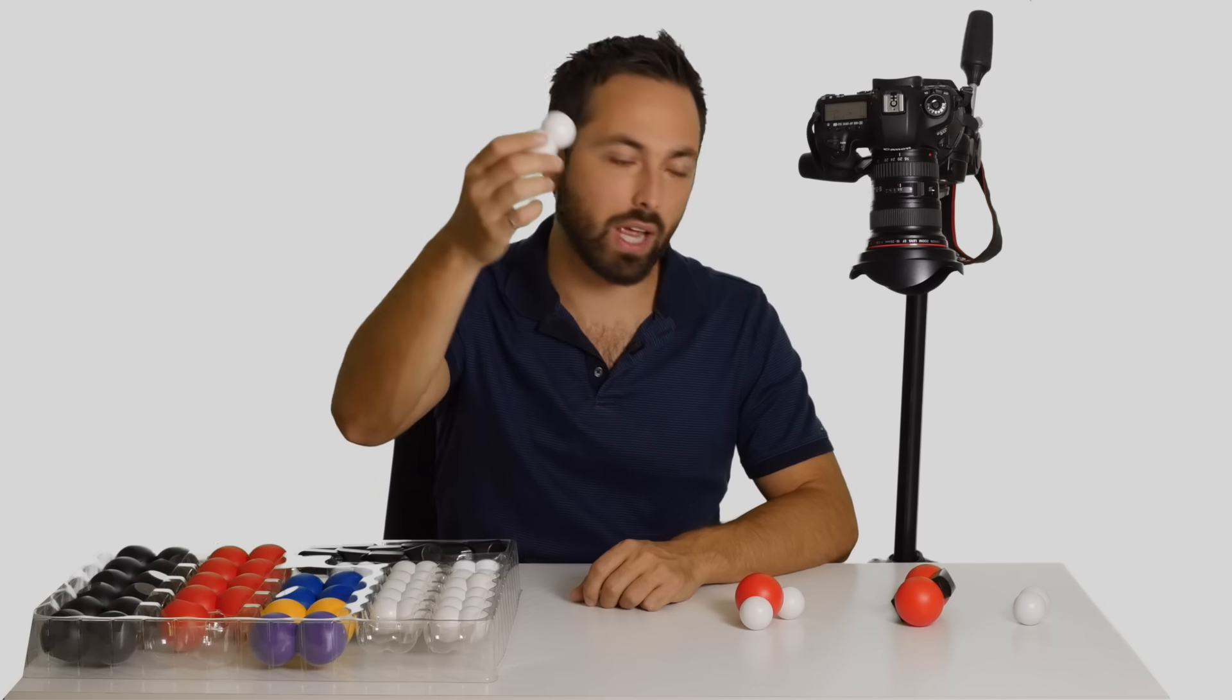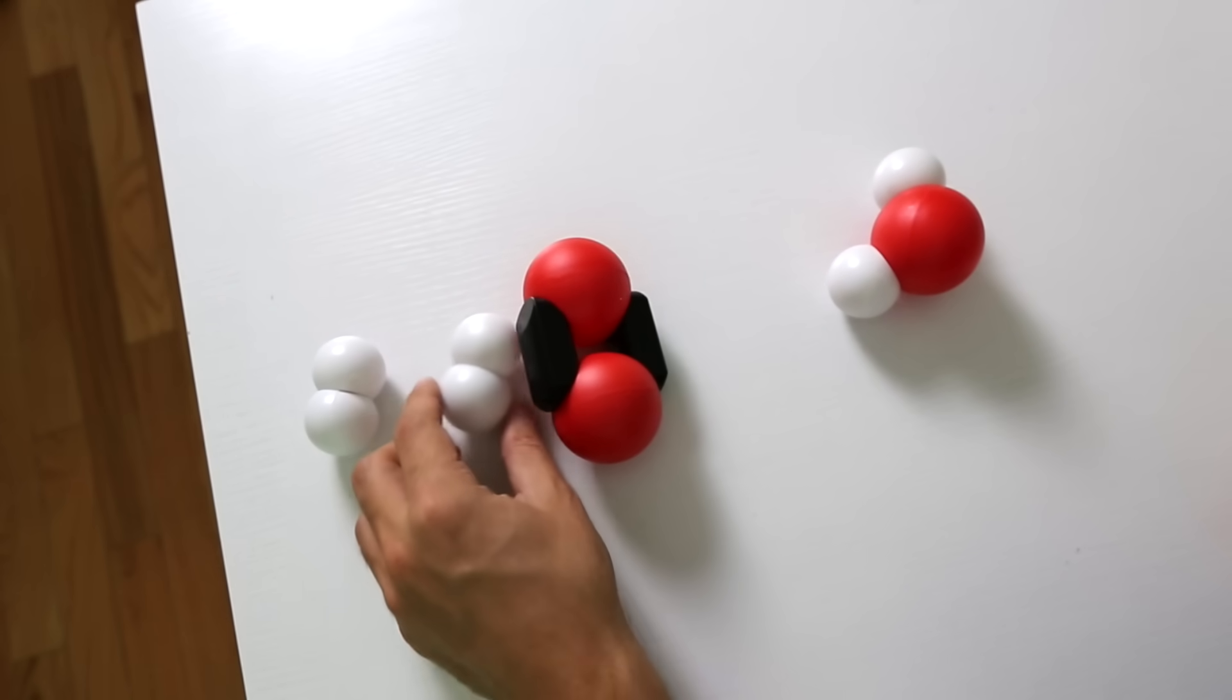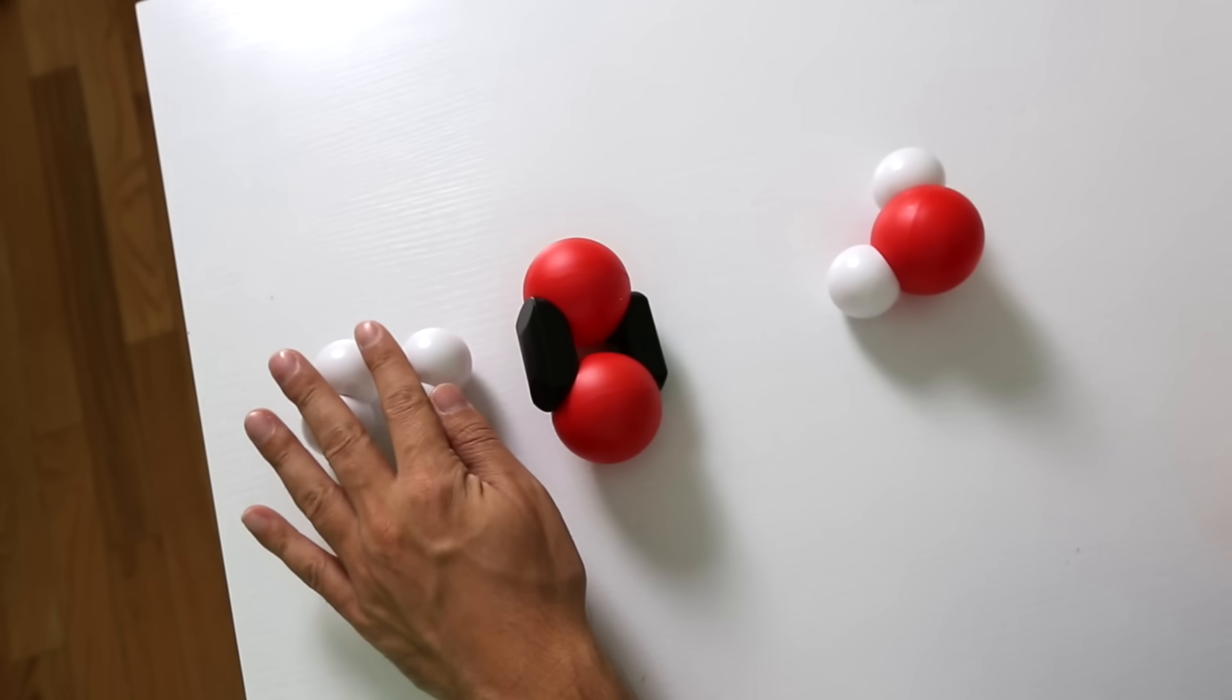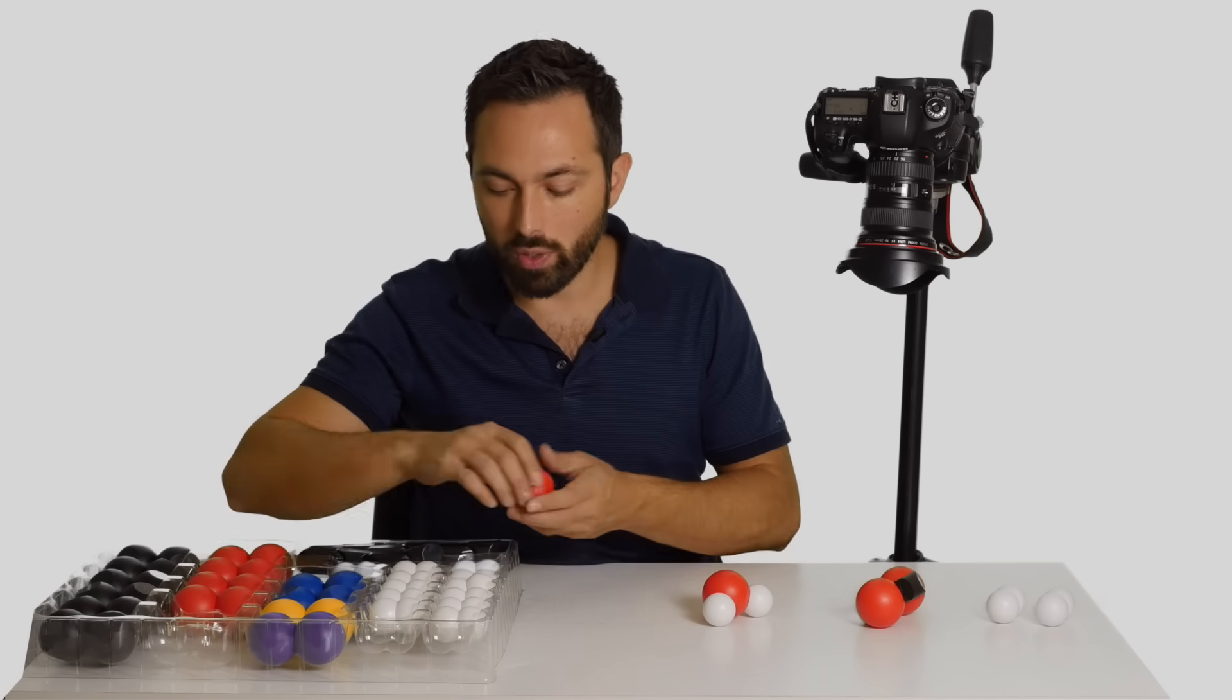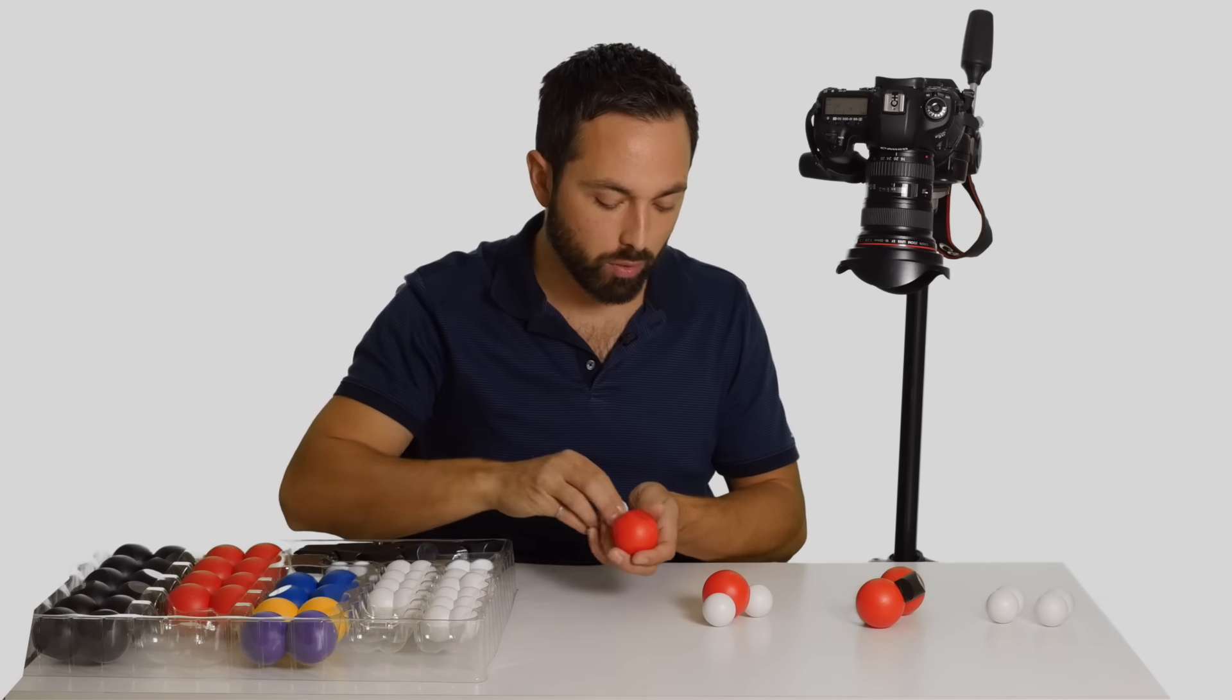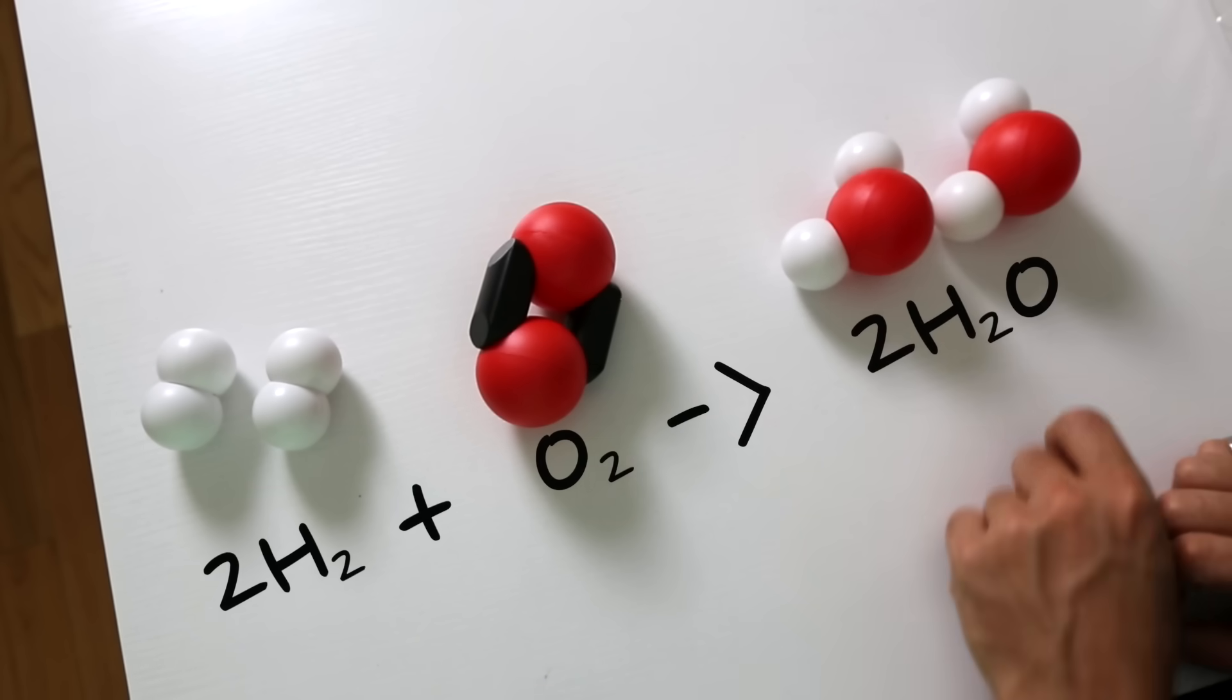One thing we could do is add another hydrogen molecule on the other side. So now we have four hydrogen atoms over here, but we only have two over here. So we know that we are actually gonna form two water molecules if we do this reaction correctly.